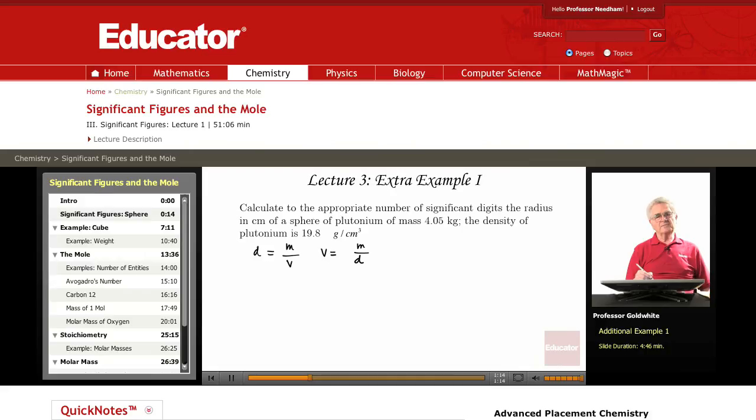So the volume of this sphere of plutonium equals 4.05 kilograms times 10 cubed grams per kilogram,